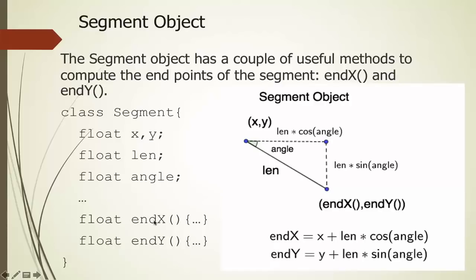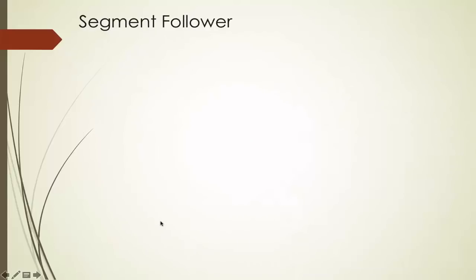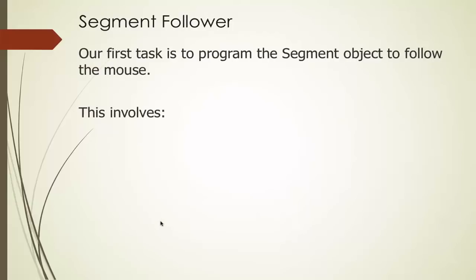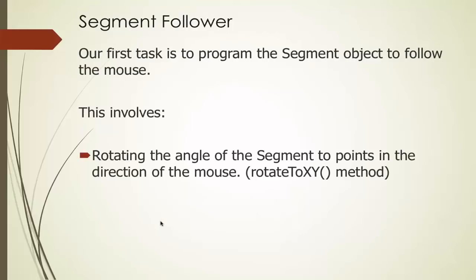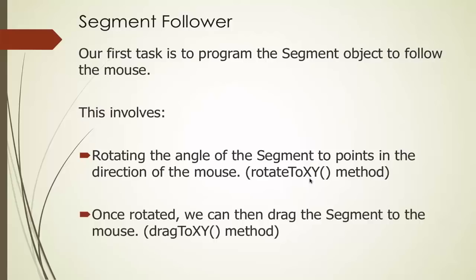To make the segment follow the mouse, we need to do two things: first rotate the segment to point in the direction of the mouse using a rotateTo(x, y) method, then drag the segment to the mouse position using a dragTo(x, y) method. So we rotate toward the mouse position (x, y), then drag to that same mouse position.